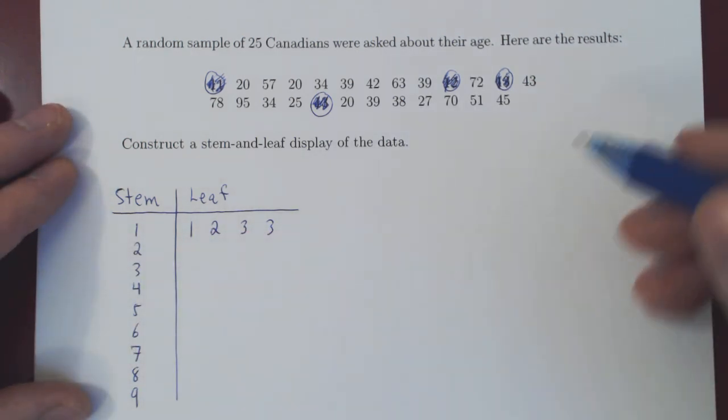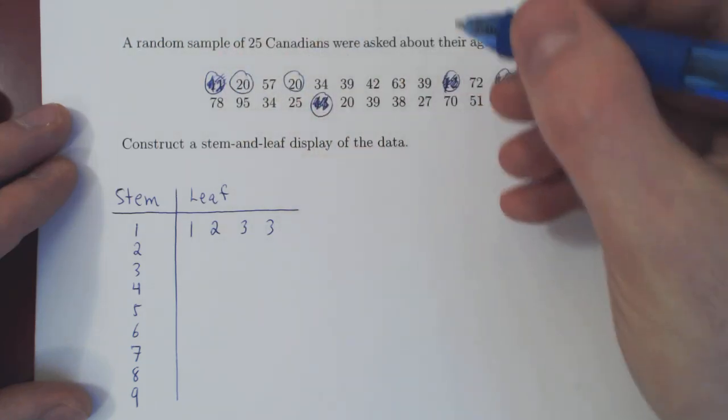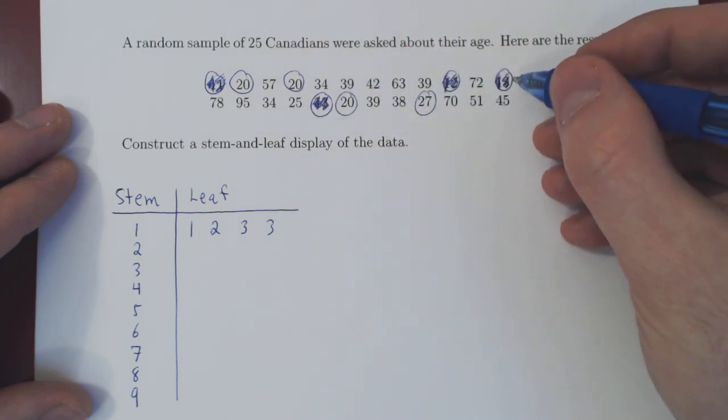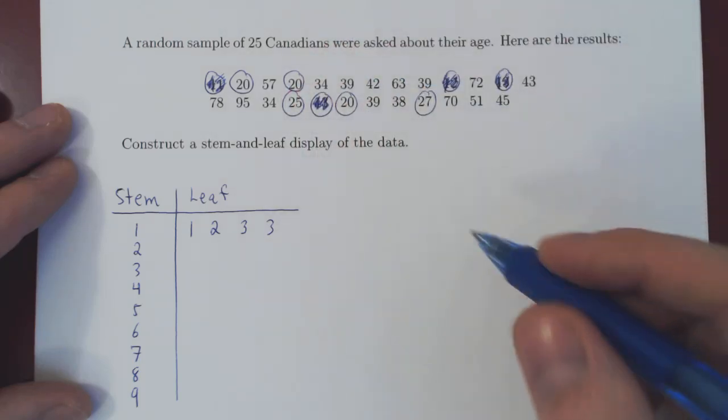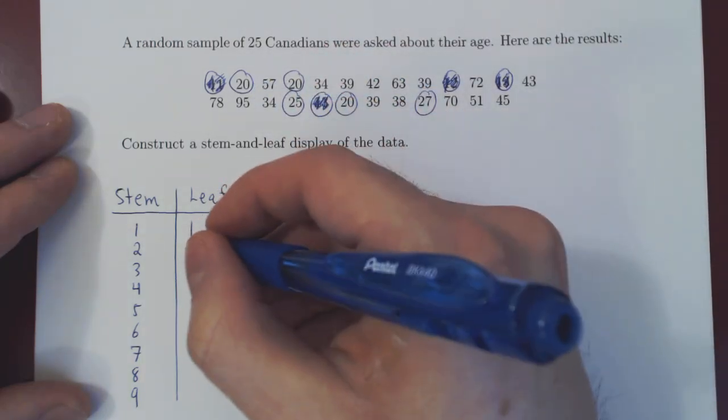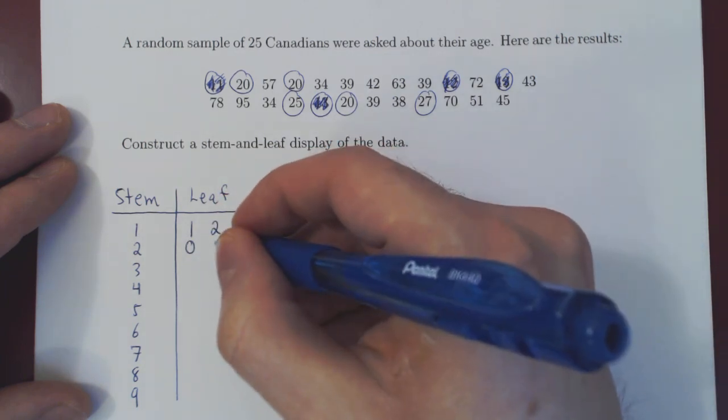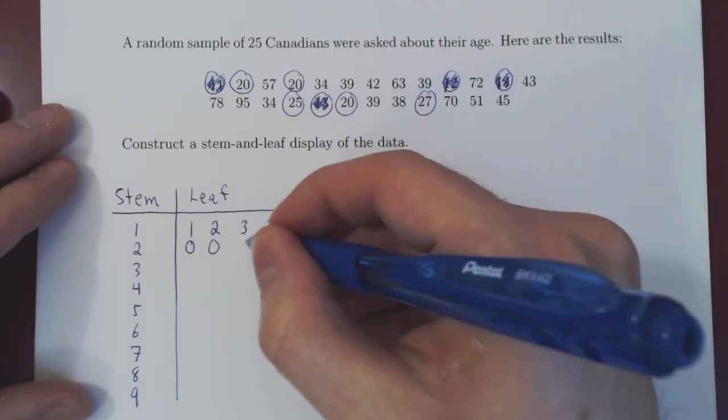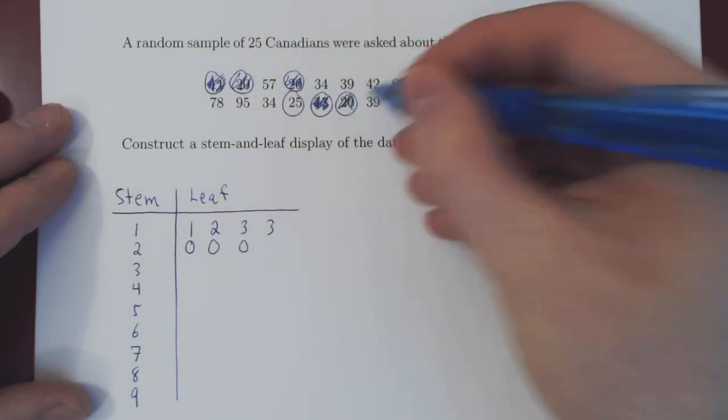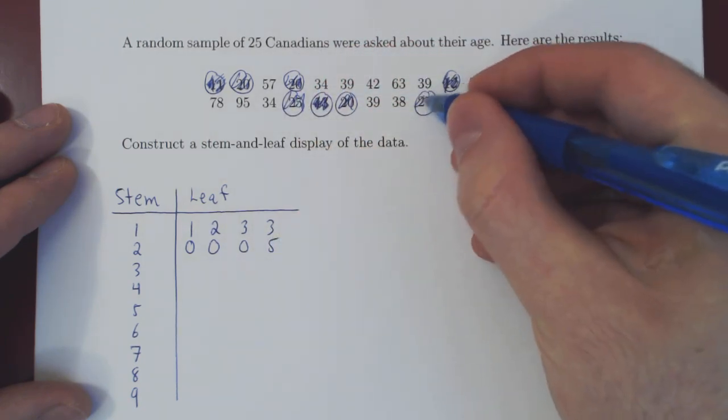So let's complete now our stem and leaf display. People in their 20s, there were five of those: 20, 20, 20. So there are three people with exactly 20 years old, so 20, 20, 20. That's a five, that's a five, and 27.